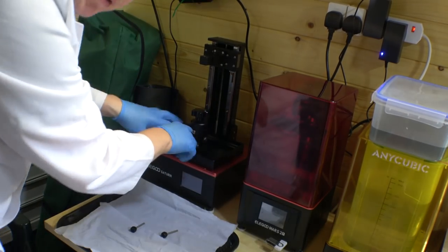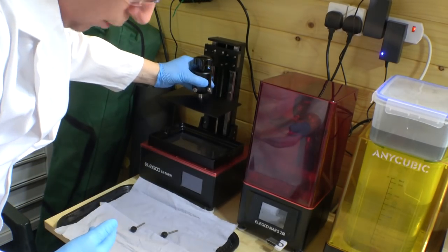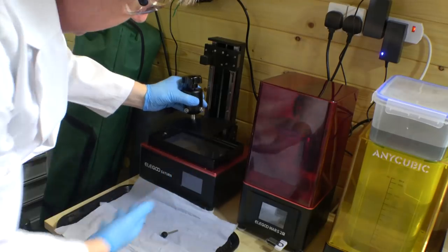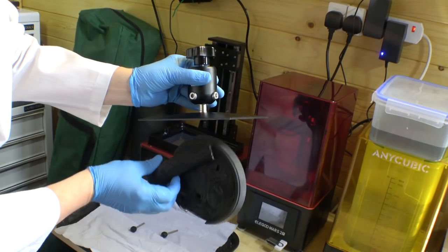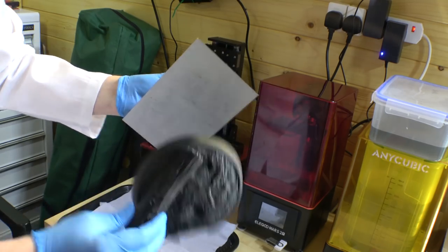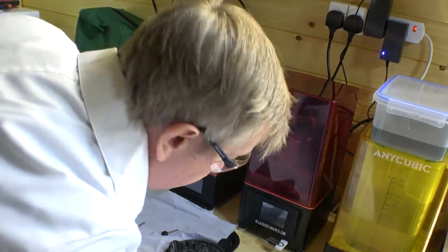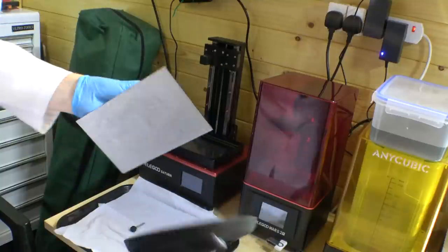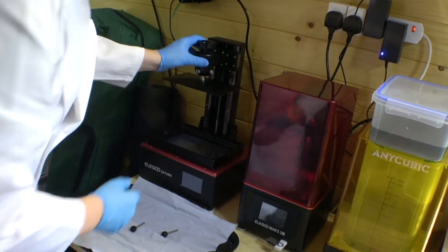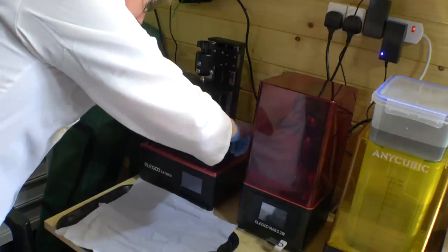The plate goes down into the vat, the light comes on in whatever pattern you demand, and that pattern of resin sticks to the plate. Then it pulls off and goes back down again but not quite as low, does the next layer, and eventually it builds up into the object. You sit it at an angle on the plate with supports that look like scaffolding, and eventually you end up with the object and you just pull off all the supports.